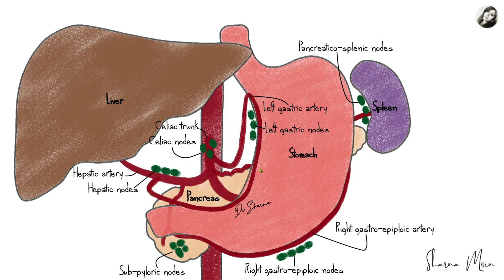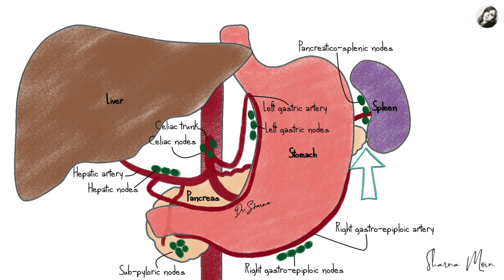If we know about the arteries of the stomach it will be easier to remember the lymph nodes. On the left side of the stomach we have the left gastric artery, and the lymph nodes present here are known as the left gastric nodes. Behind the stomach we have the pancreas and spleen — the tail of the pancreas is related to the spleen, so this junction is known as the pancreatic-splenic junction, and the lymph nodes present here are known as the pancreatic-splenic nodes, named according to their location.